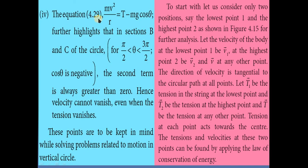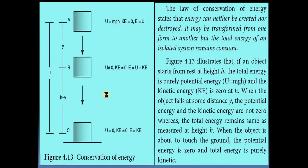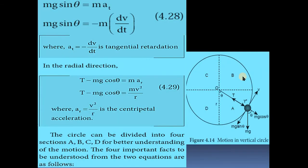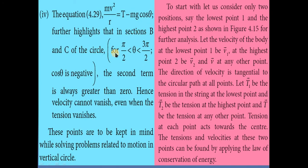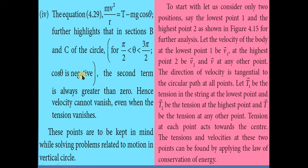The fourth point: from the equation, MV squared by R equals T minus mg cos theta. In sections B and C, for pi by 2 less than theta less than 3 pi by 2, cos theta is negative. The second term is always greater than zero, hence the velocity cannot vanish even when the tension vanishes. These four points must be kept in mind while solving problems related to motion in a vertical circle.